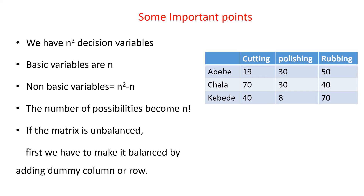Let's note some important points. In a transportation problem we have m rows and n columns, giving m times n decision variables. Here, since we have a square matrix due to the one-to-one correspondence, we have n-squared (n times n) decision variables.